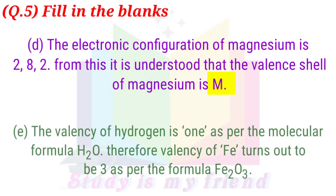Part E: The valency of hydrogen is one as per the molecular formula H2O. Therefore, valency of Fe turns out to be 3 as per the formula Fe2O3.